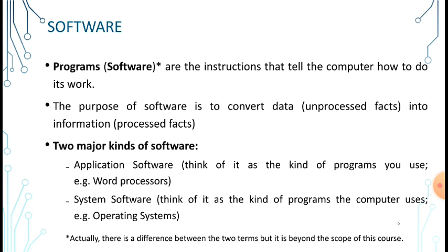We have two major kinds of software: application software and system software. Application software includes programs such as Microsoft Word or word processors. System software includes operating systems.